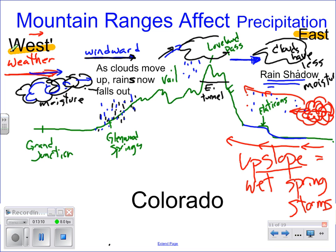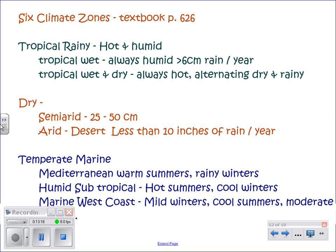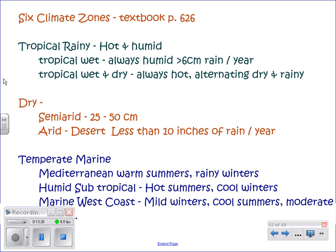Finally, there are six major climate zones on the Earth. The textbook on page 626 has a picture detailing all of them and showing where each is located. For your climate booklet, you need information for each climate zone, with specific examples of where they occur and pictures. The first climate zone is tropical rainy — warm and wet, or hot and humid. There are two subdivisions: tropical wet, which is pretty much always humid with more than six centimeters of rain per month, and tropical wet and dry, which is always hot but alternates between a dry season and a rainy season.